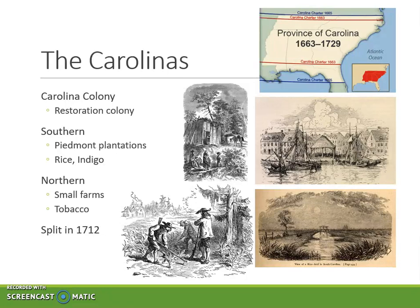Established as one colony called Carolina and governed by proprietors, the southern part of this colony served first as support for the British West Indies. Soon, though, the slave economy of the sugar islands reached the shores of the Carolina colony. The cultivation of rice in the plantation system quickly became profitable, and planters in the hundreds and slaves in the tens of thousands soon inhabited Carolina. The geography was particularly suited to plantation agriculture, with broad plains and easily navigable rivers extending deep into the Piedmont.